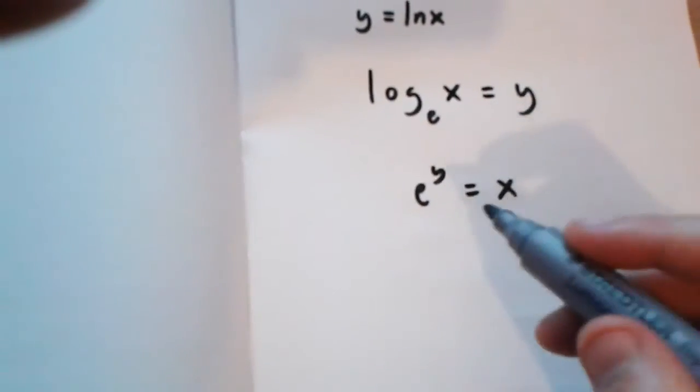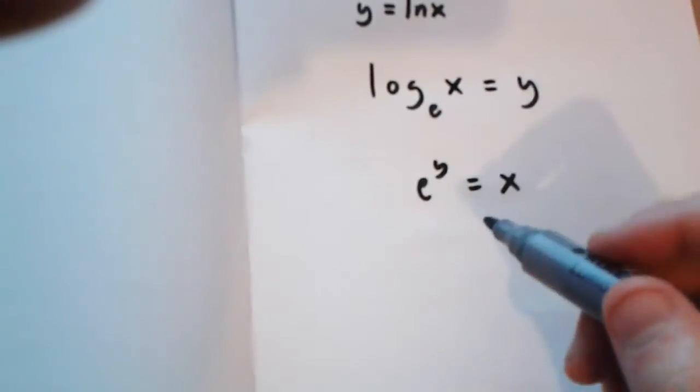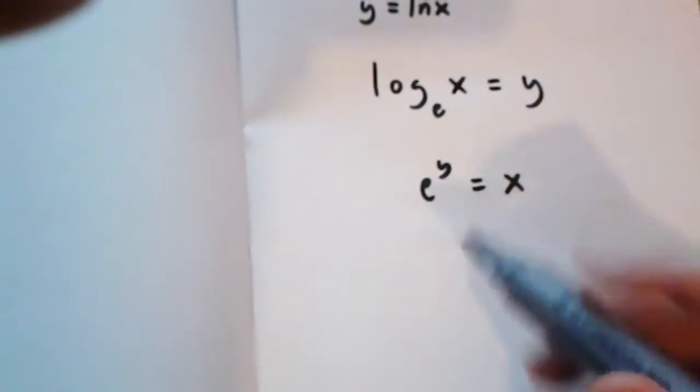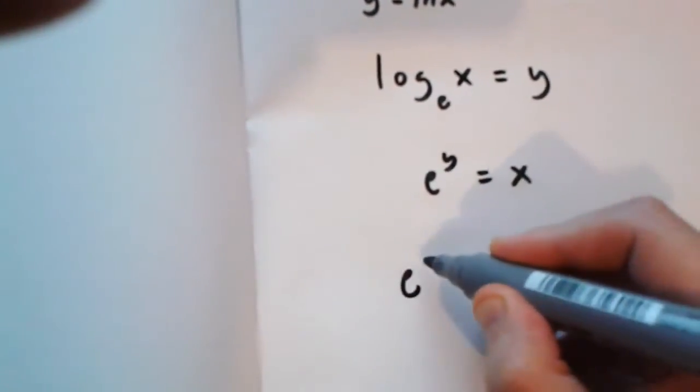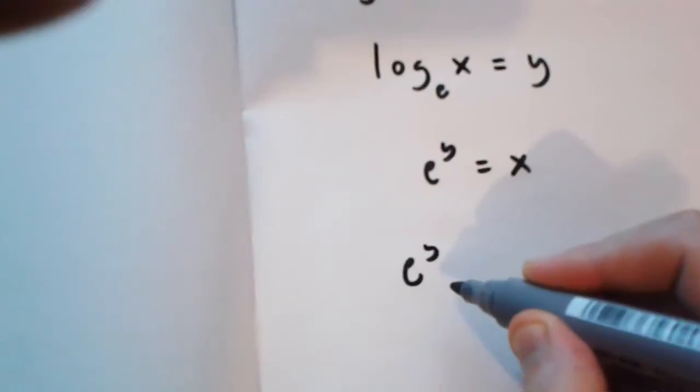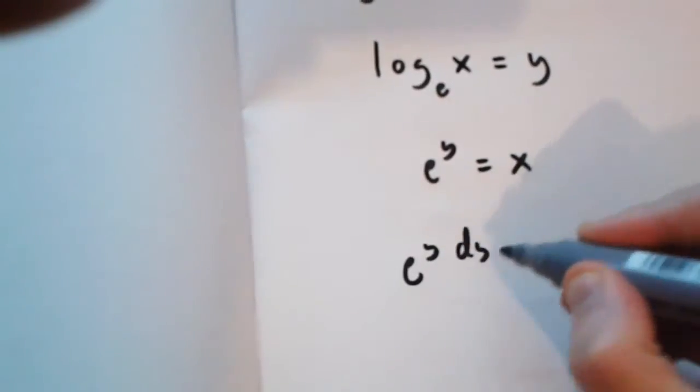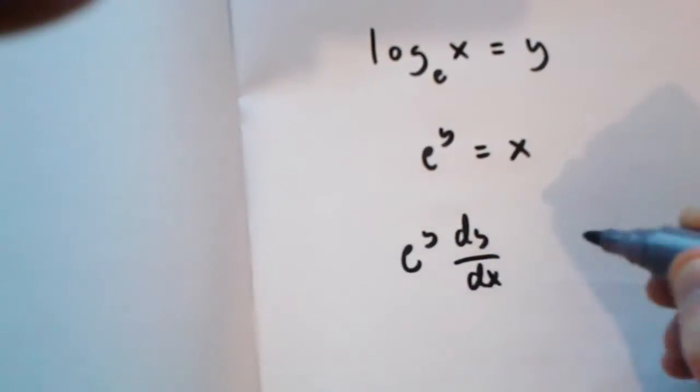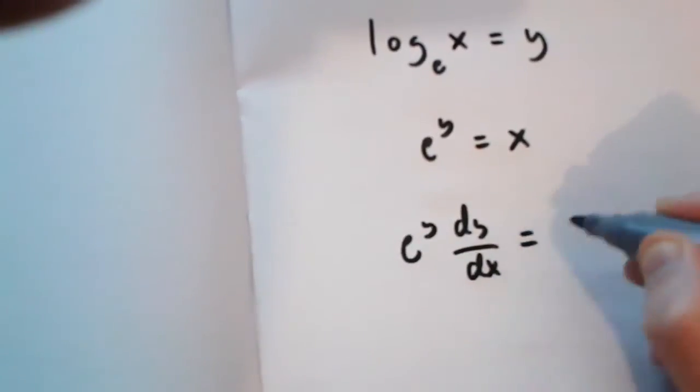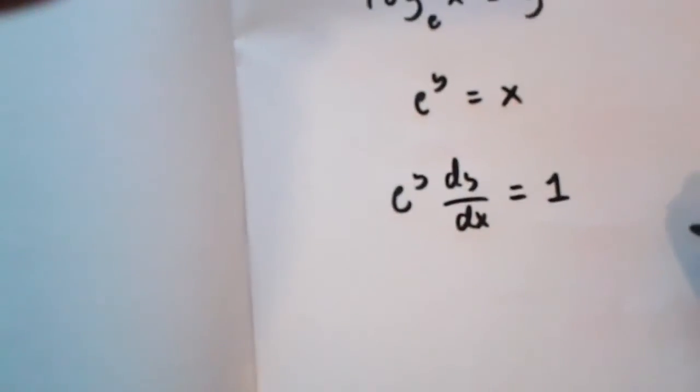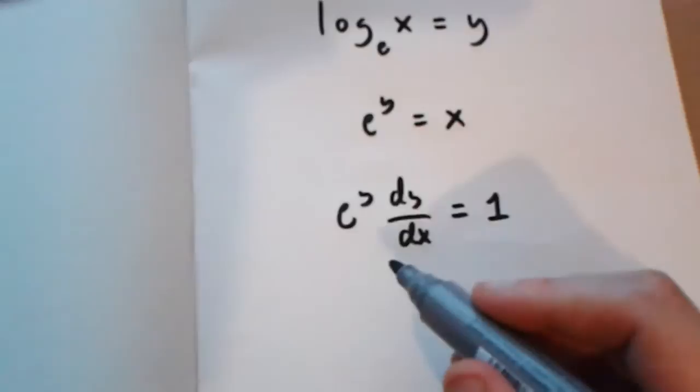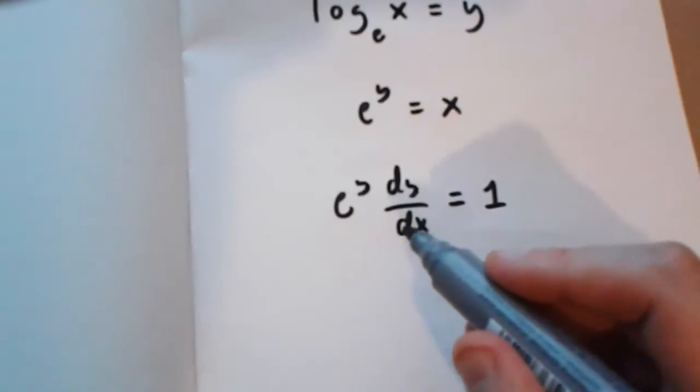If we use implicit differentiation for this expression, we will get e to the power of y multiplied by dy over dx equals 1. Now, from here, what do we do?